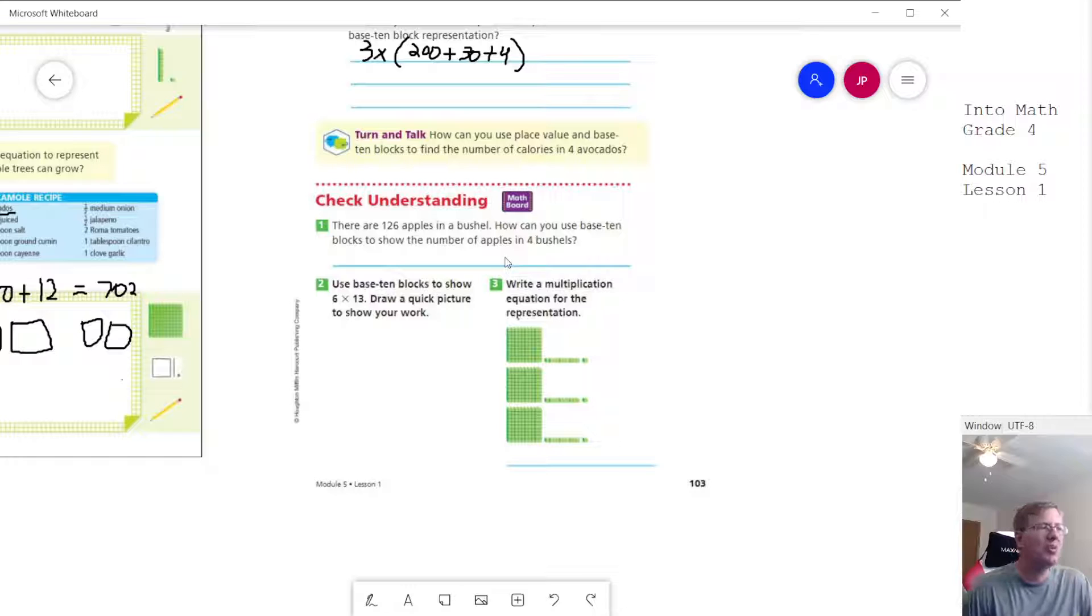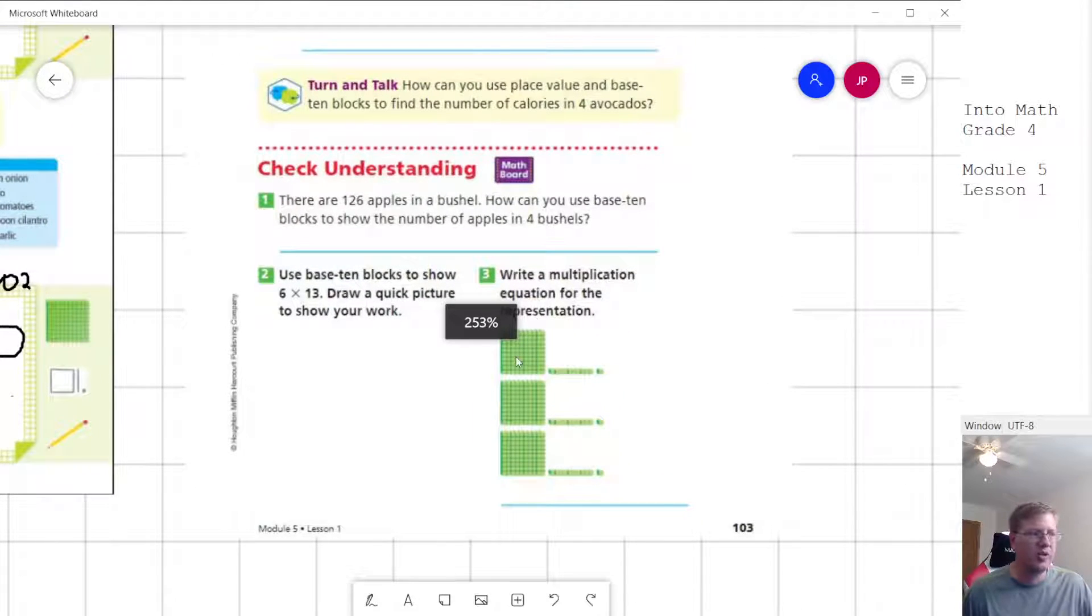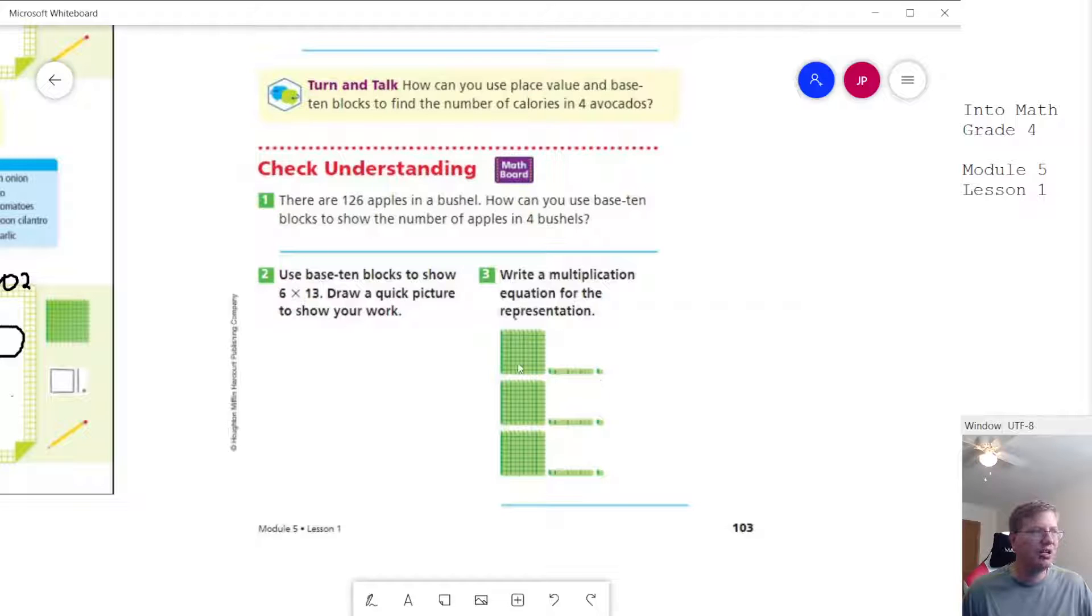Okay, so for number three, write the multiplication equation. So we need to think about what blocks we're working with to get the number. We are working with one 100 block, one 10 block, and a one block. So that's going to give us 111. And then we want to figure out how many groups we have. We have three equal groups of that. And so we would get 111 times 3, and then we could go ahead and write the answer of 333.